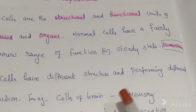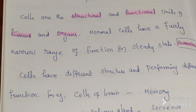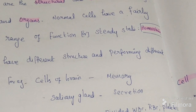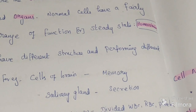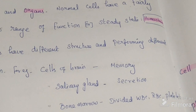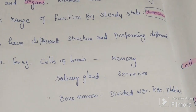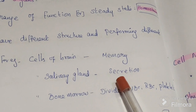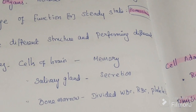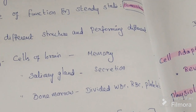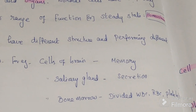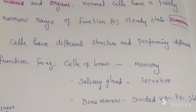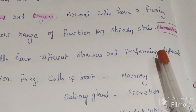Cells have different structures and perform different functions. For example, cells of the brain have special functions for memory and concentration. The cells of the salivary gland perform secretion. Bone marrow cells divide and produce WBCs, RBCs, and platelets. All cells have different structures performing different functions — this steady state is called homeostasis.